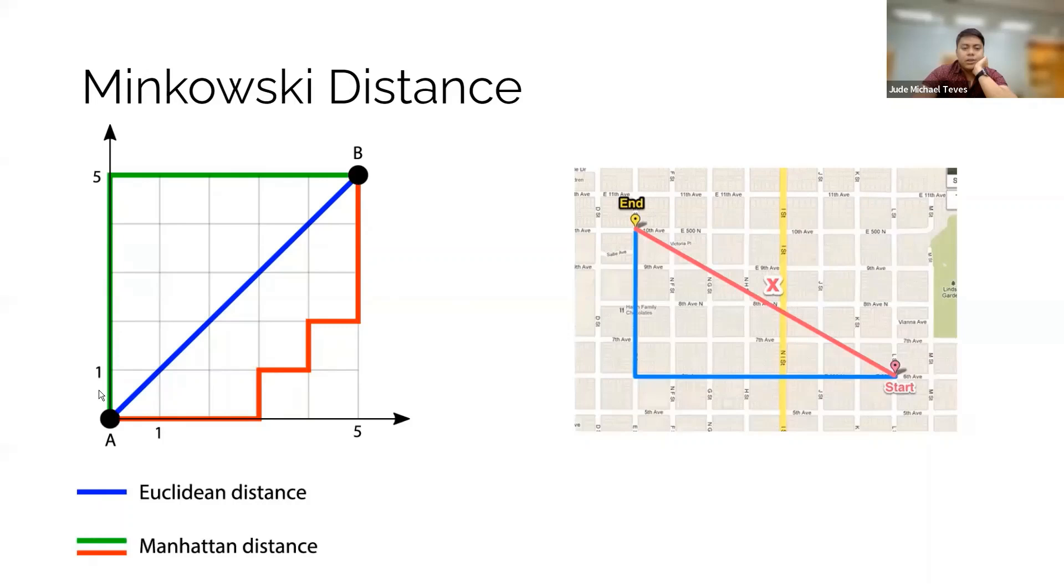If you're using Euclidean, then it's going to be the diagonal line here. That's going to be your distance, which is shorter.